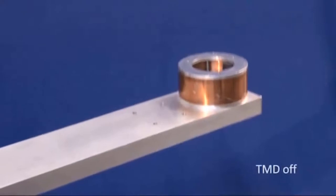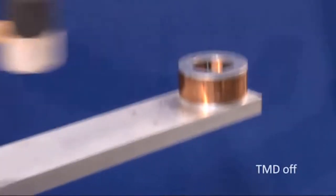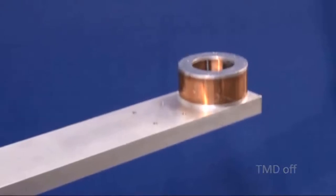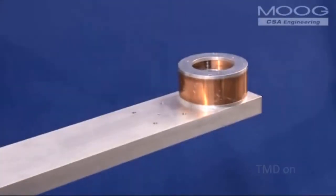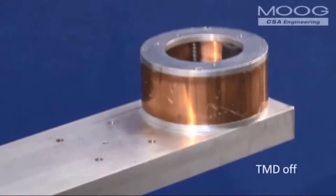A tuned mass damper or TMD is a simple passive device that can eliminate undesirable motion due to resonant vibration within a mechanical structure. Typically, the TMD is attached to a point on the structure where the vibration-induced displacements are the largest. In this case, we have attached the TMD to the end of the cantilevered aluminum beam.